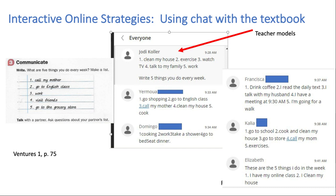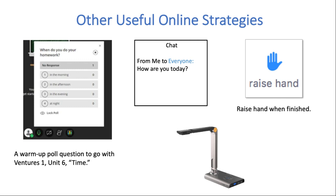Here are some other examples of how I engage my students. On the left-hand side there's a poll question from Ventures One, Lesson C, Unit 6. We've been learning simple present tense with 'when' questions — the prepositions in, on, at, from, and to. So I asked this poll question as a warm-up: 'When do you do your homework?' Their choices are in the morning, in the afternoon, in the evening, and at night. Most students actually do their homework in the morning before class, some at night. The neat thing was they knew the time words but didn't realize the preposition that went with each one — so they could see the preposition in context.